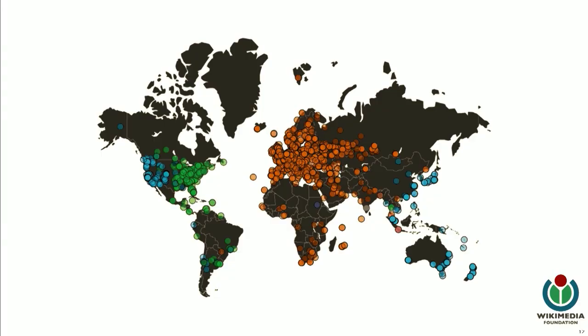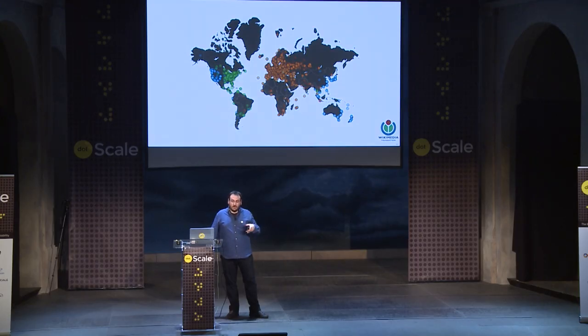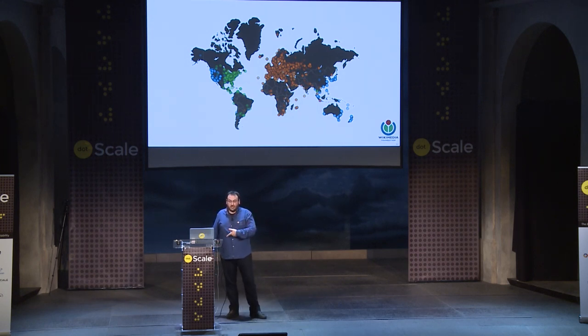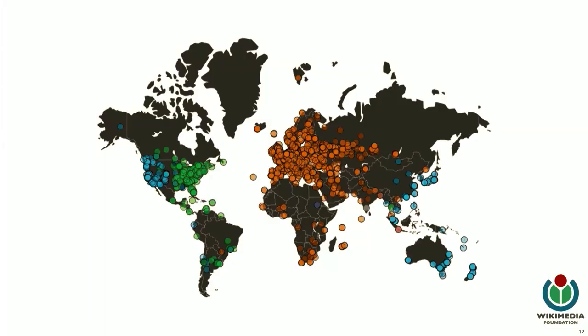Here's the map, kindly created by the RIPE NCC using a project called RIPE Atlas that spreads probes all over the world. This is a visual representation of the minimum latency to our data centers. Blue is San Francisco — you can see it covers the US West Coast, Asia, and Oceania. Green is Ashburn, and orange is Amsterdam.